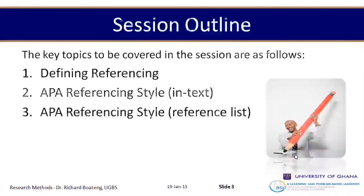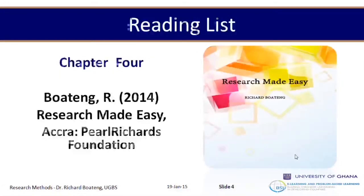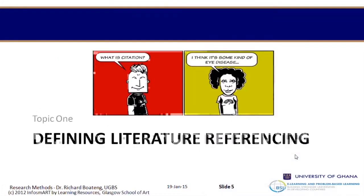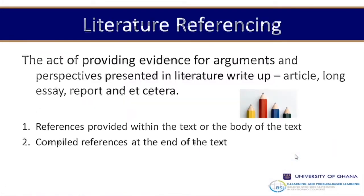We are looking at chapter four of our reference book. Our reference book is called Research Made Easy. It's on Google Books and soon will be on iBooks too. Now, defining literature reference — what is literature reference? Literature reference is the act of providing evidence for the arguments and perspectives presented in our literature write-up — that's an article, an essay, or a long essay.